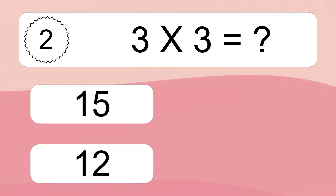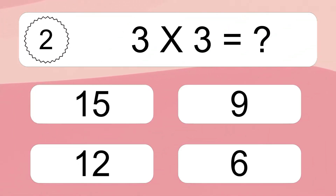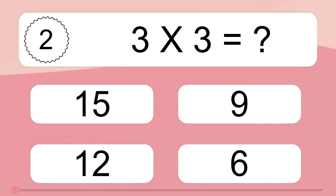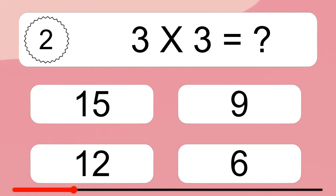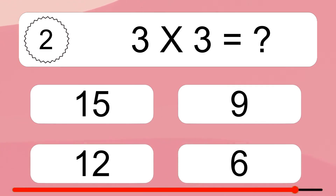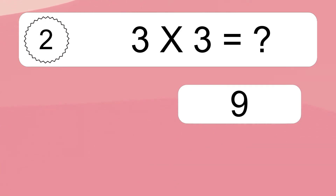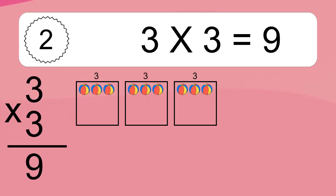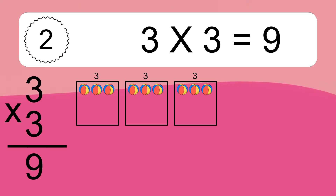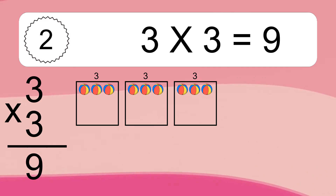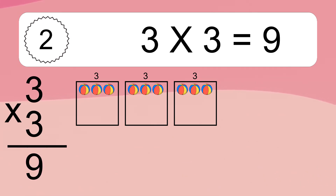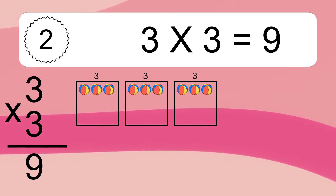Three times three equals what? Three times three equals nine. We have three boxes, and each box has three colorful balls inside. If you count all the balls in all the boxes together, you will have three times three balls. This equals nine balls.